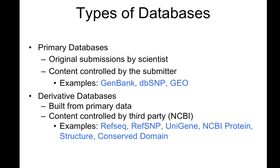When you look at the database, you have the primary database and the derivative database. In the primary database, we as scientists submit different information, like sequence information, and we control that information. GenBank is very important. dbSNP is the SNP database. GEO is, for example, a microarray database — that's all controlled by the users. From this primary database, we have the derivative database, which is controlled by a third party — in this case NCBI. They create reference sequences, they create something called UniGene. We're going to use it in the next lecture. You will see how useful it is to find genes. There is also a structured database and a conserved domain database, again derived from the primary database.